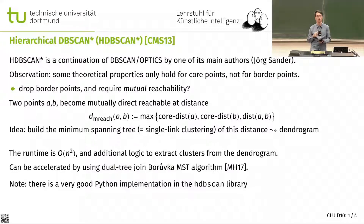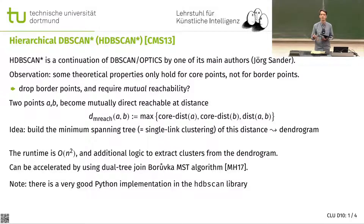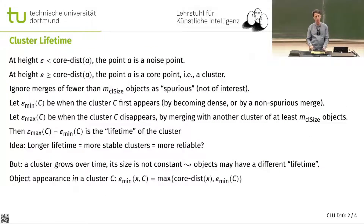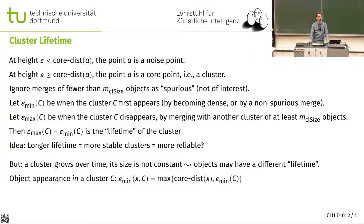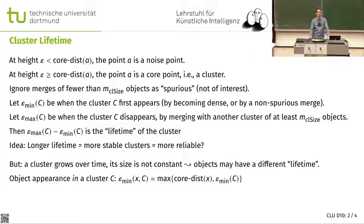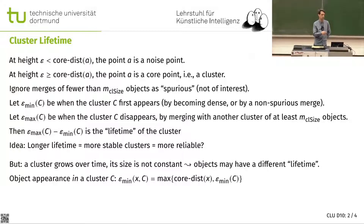HDBSCAN* is a very popular clustering method because of this good implementation. If you're in research, it is a prime example that it's not just enough to have a good idea — you need to write a readable, good paper and have a good implementation. Then you will get many users and citations. The other important contribution is that they reconsidered how to get clusters from a dendrogram. The usual way of cutting a dendrogram at a certain height would give us DBSCAN again with the symmetric version, so they asked: how do we cut subtrees at varying heights?